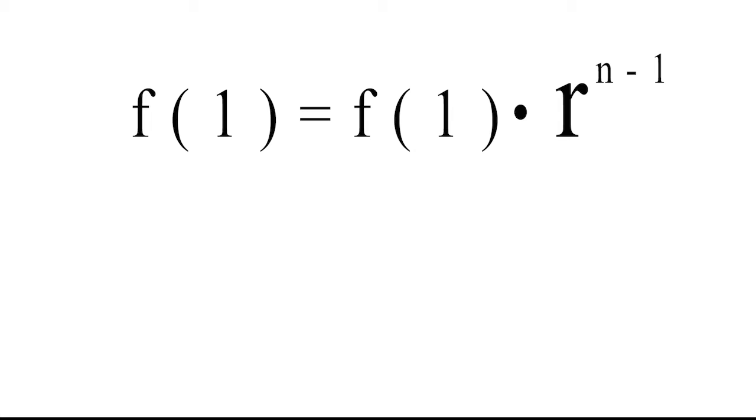f(n) equals f(1) times r to the power of n minus 1. Remember, f(1) is the first term in the sequence, and r is the common ratio.